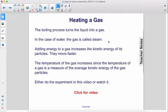The boiling process turns the liquid into a gas. In the case of water, the gas is called steam. Adding energy to a gas increases the kinetic energy of its particles. They move faster. The temperature of the gas increases, since the temperature of a gas is a measure of the average kinetic energy of the gas particles.